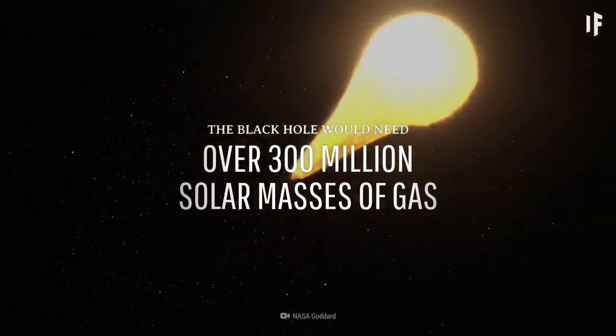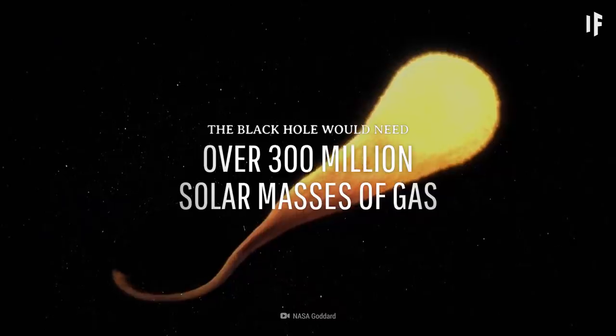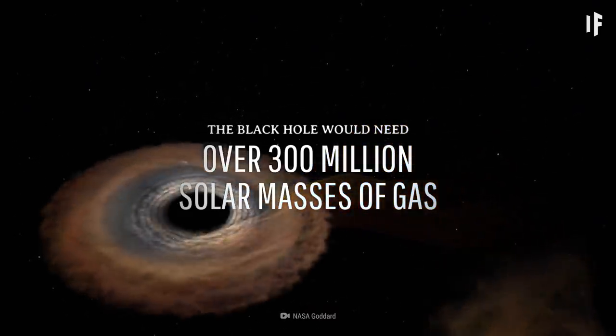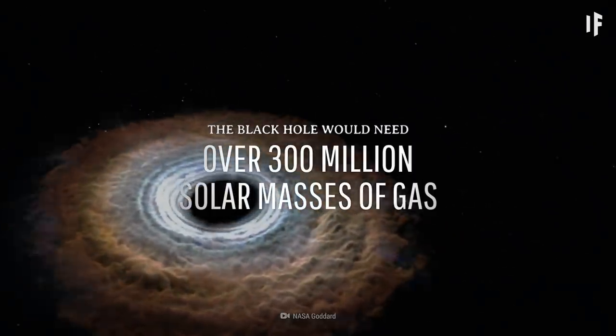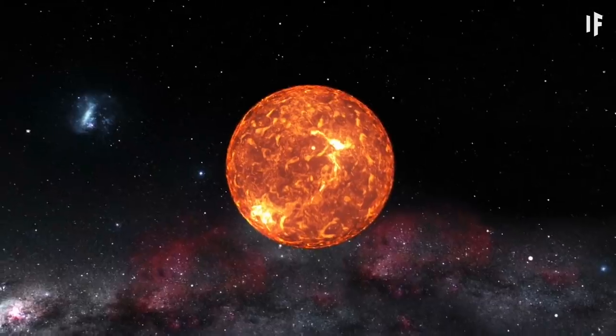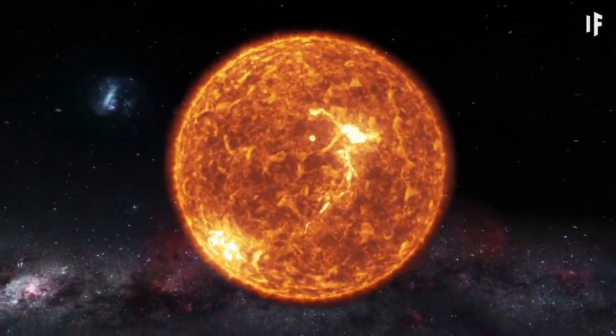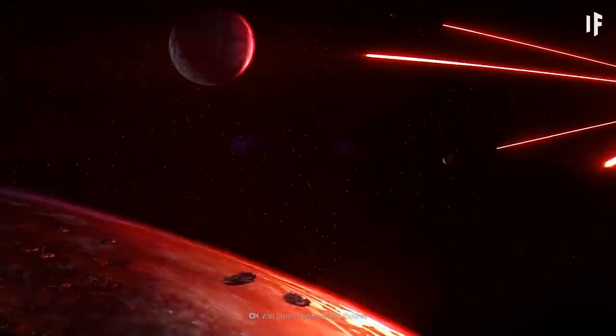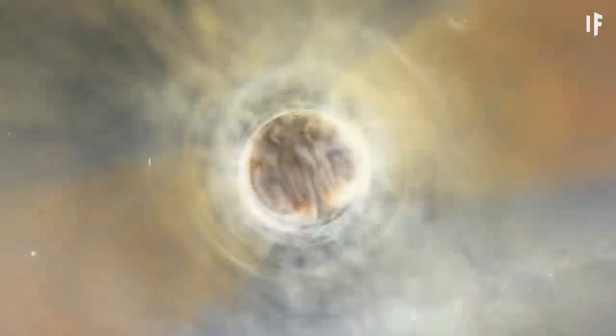The black hole would have to take in over 300 million solar masses of gas to create an explosion greater than the one that tore apart the Ophiuchus cluster. And the amount of gas it displaced would equal several trillion suns. Across the Universe, the blast would rip galaxies apart and destroy planets. And depending on the amount of gas it took in, the explosion could continue for hundreds of millions of years.